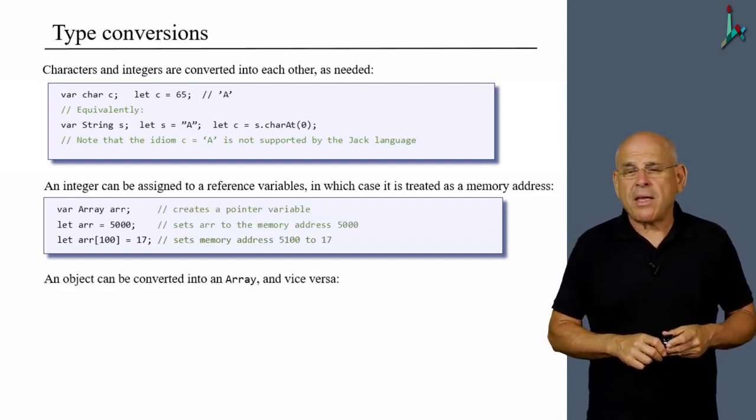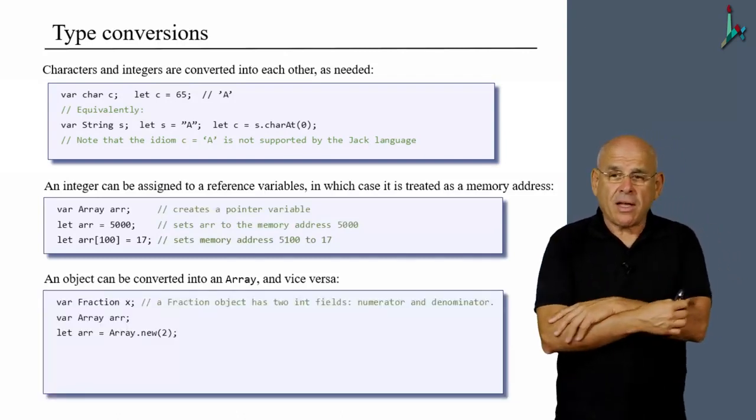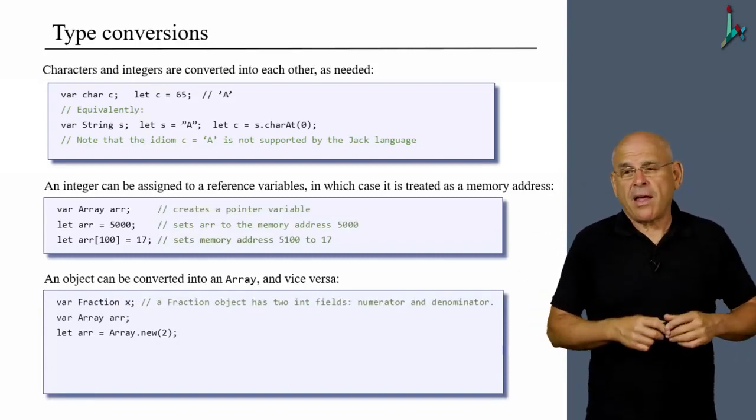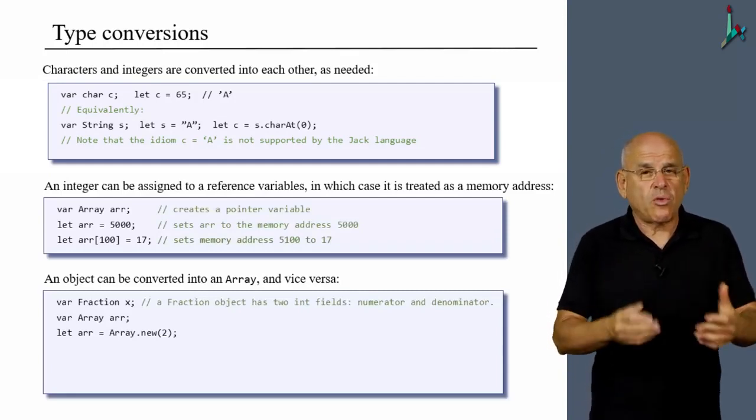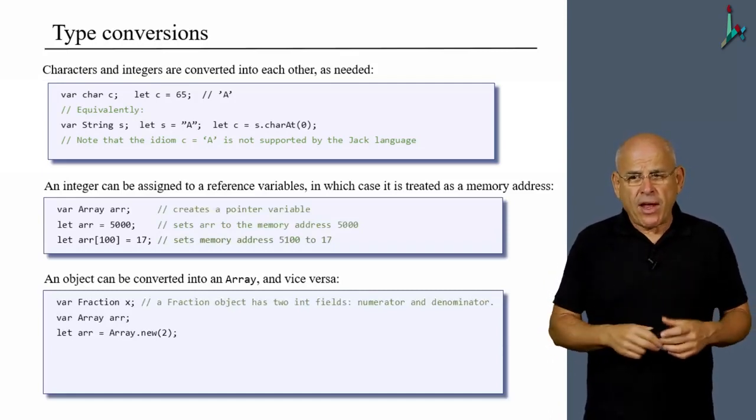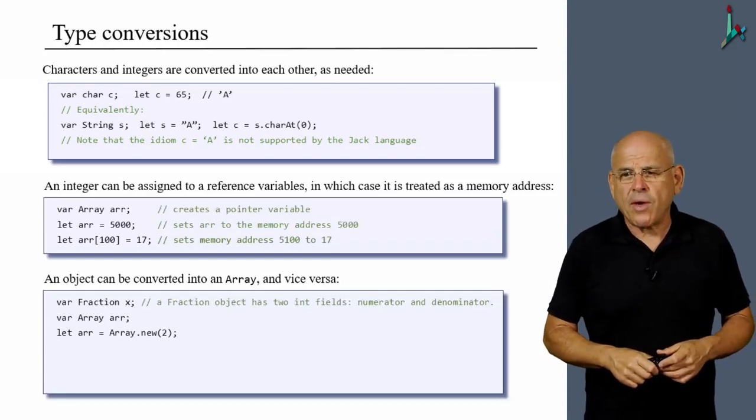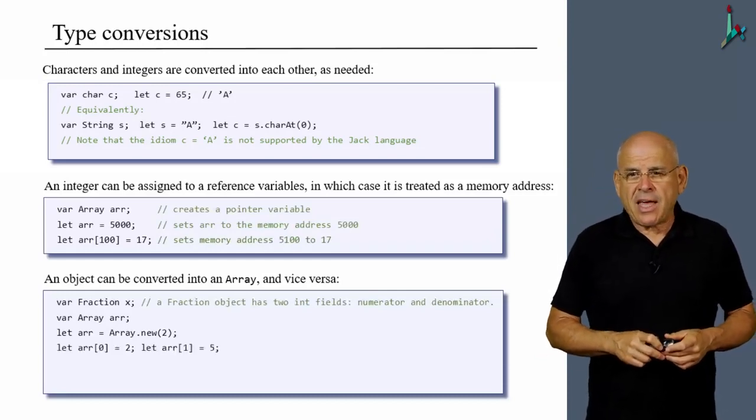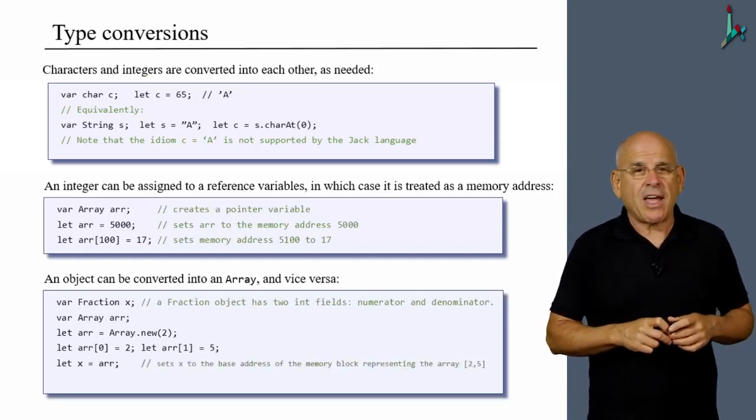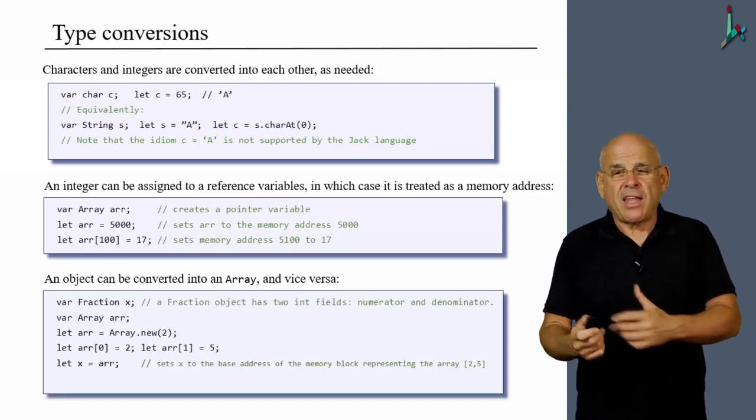What else? An object can be easily converted into an array and vice versa. So for example, if I create an object x of type fraction, then recall that fraction objects have two fields, numerator and denominator. So let's put this at the back of our mind. Then I create an array called ARR. I construct the array to be two entries long. And then I say ARR 0 equals 2, ARR 1 equals 5. And now I do something strange. I say x equals ARR.